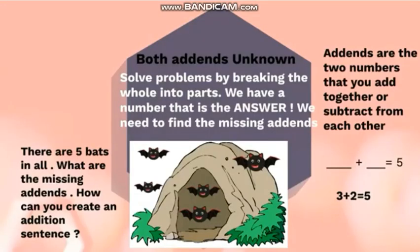First of all, let's understand and recall what addends are. Addends are the two numbers that we add together or subtract from each other. So if I have two numbers that I am adding together, these are called my addends. In the example we have here, three plus two equals five — so we can say that three and two are the addends in this addition sentence.